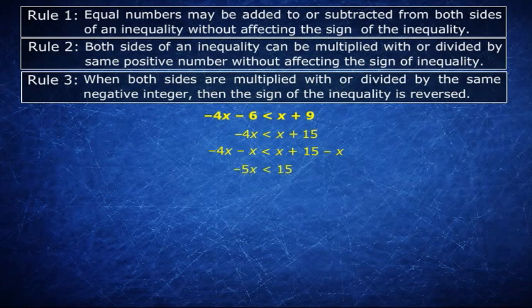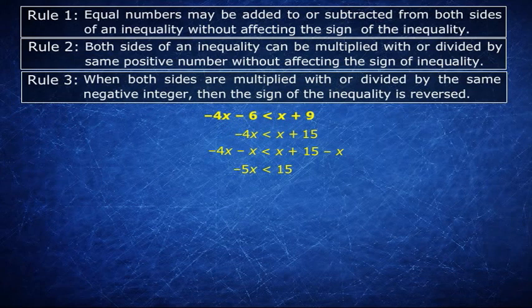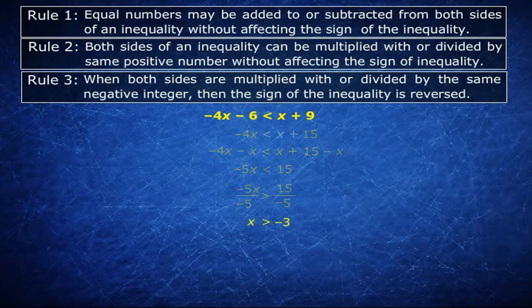Now we need to divide the two sides by minus 5 which is negative. And this means that the sign of the inequality would reverse. That is the less than sign would now become greater than. So we get minus 5x divided by minus 5 is greater than 15 divided by minus 5 which is nothing but x is greater than minus 3.